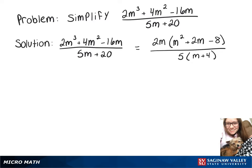Now that m squared plus 2m minus 8 is a quadratic expression that we can factor. So now we have 2m times m plus 4 times m minus 2.